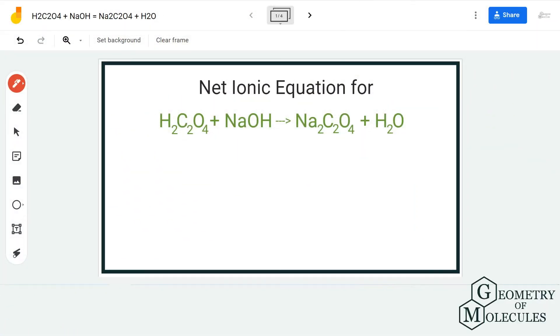Hi guys, welcome back to our channel. In today's video we are going to help you understand the net ionic equation for this equation where we have oxalic acid (H₂C₂O₄) and NaOH, sodium hydroxide, on the reactant side, and we have one salt and water on the product side. This is basically a neutralization reaction because we have a weak acid and base on the reactant side and salt and water on the product side.